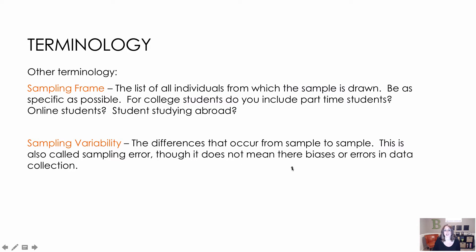Sampling variability, sometimes called sampling error, is very normal and natural. Looking back at our M&M example where I was drawing M&Ms out of a bag, each time I tried to see how many M&Ms it would take to get one of each color, I would get a different response — that is sampling variability. The more samples you do, the more we're able to see what we would expect to happen. Just doing one sample might not be very indicative of the entire population, so we do several samples.